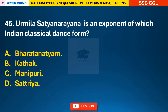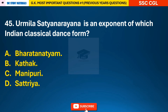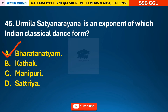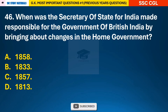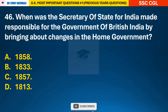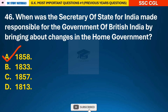Question 45: Urmila Sathyanarayana is an exponent of which Indian classical dance form? — answer A: Bharatanatyam. Question 46: When was the Secretary of State for India made responsible for the government of British India by bringing about changes in the home government? — answer A: it was in the year 1858.